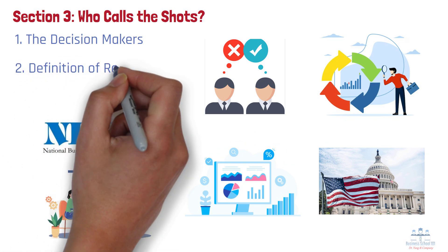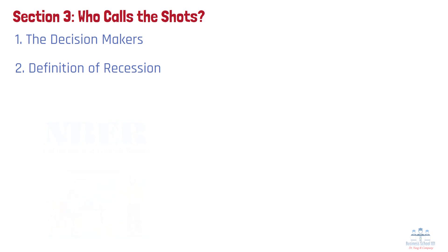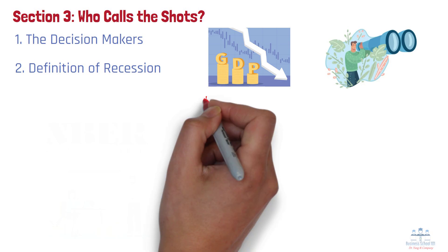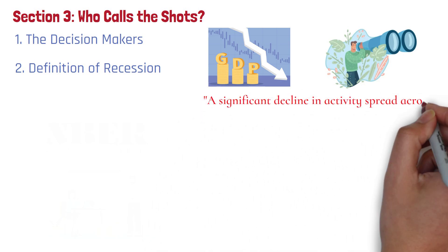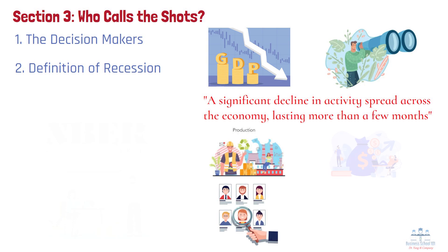Number 2: Definition of Recession. Now, you might have heard in the news that a recession is two quarters of falling GDP, but that's actually an oversimplification. The NBER looks at the bigger picture. Their definition is more comprehensive: they're looking for a significant decline in activity spread across the economy, lasting more than a few months, showing up in things like industrial production, employment, income, and trade.